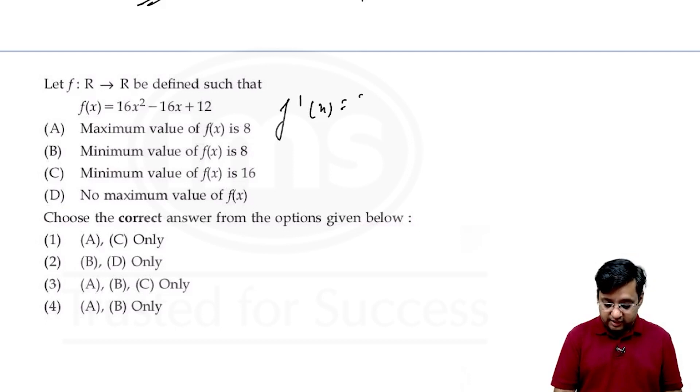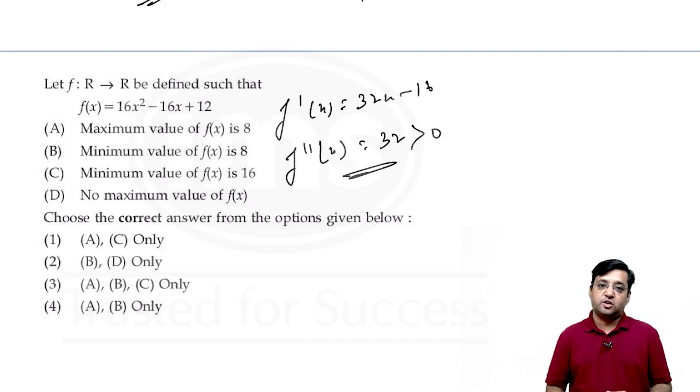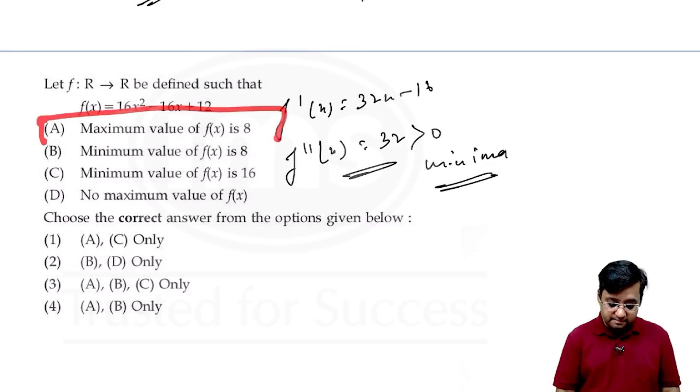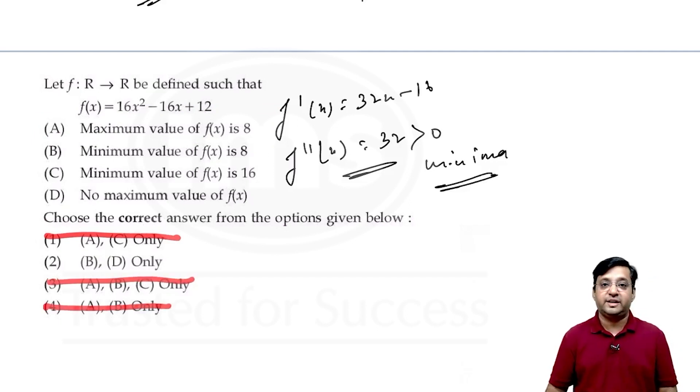If we see a maximum and a minima then we will differentiate this. So we are going to get 32x minus 16 and if we do the second differentiation we are going to get 32. Correct? Which is greater than 0. This is the case of minima. So we have written here maximum value of f(x). Now a is in first, third and fourth. So we can easily eliminate this because our answer is going to be in minima. So our option would be 2.